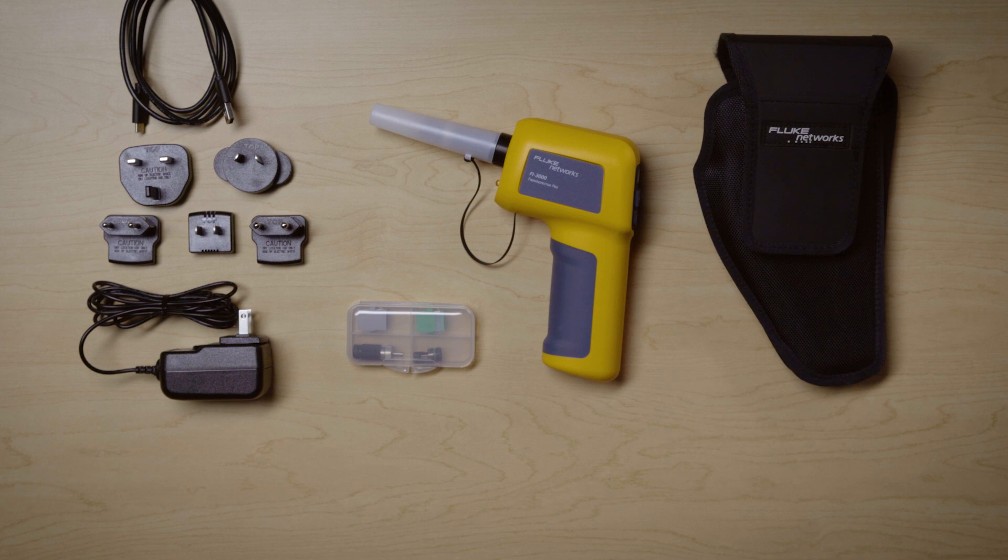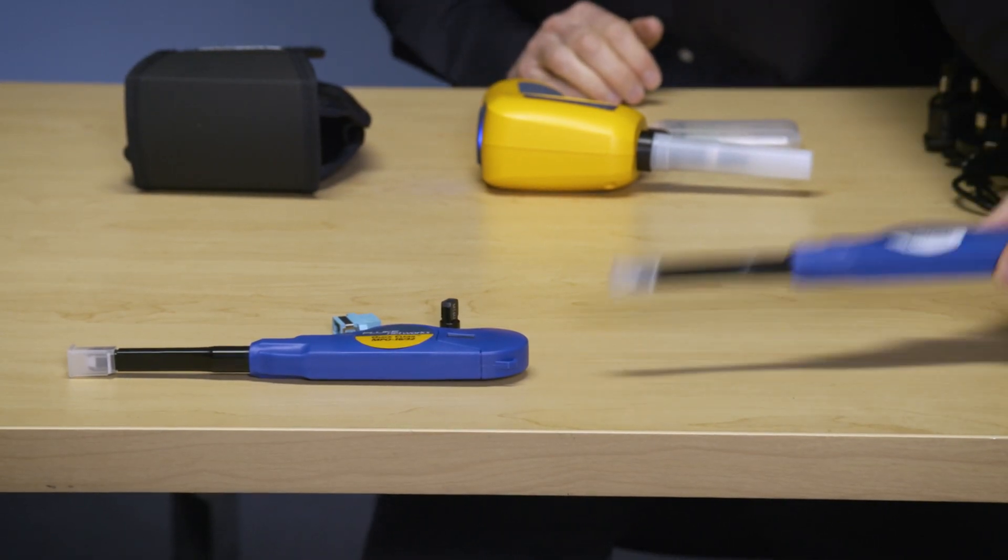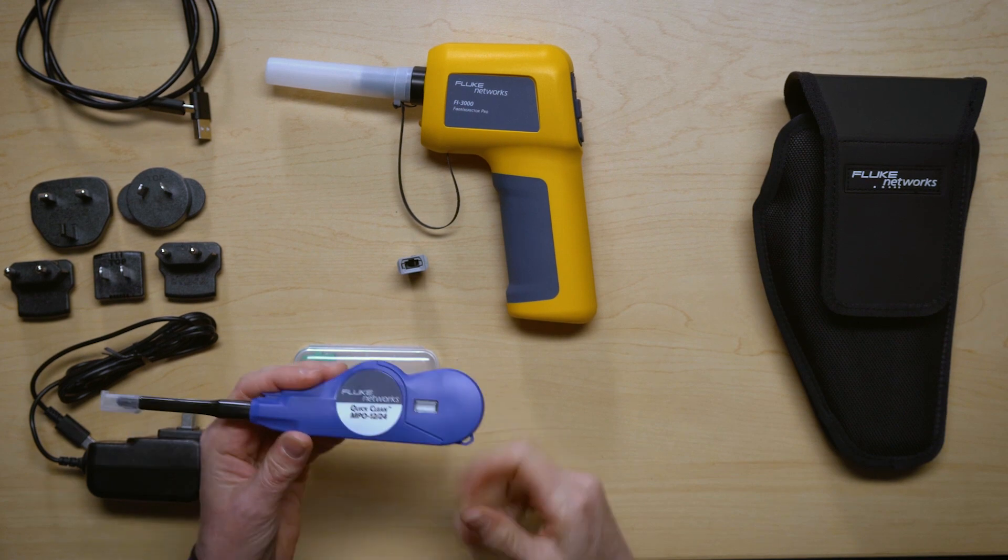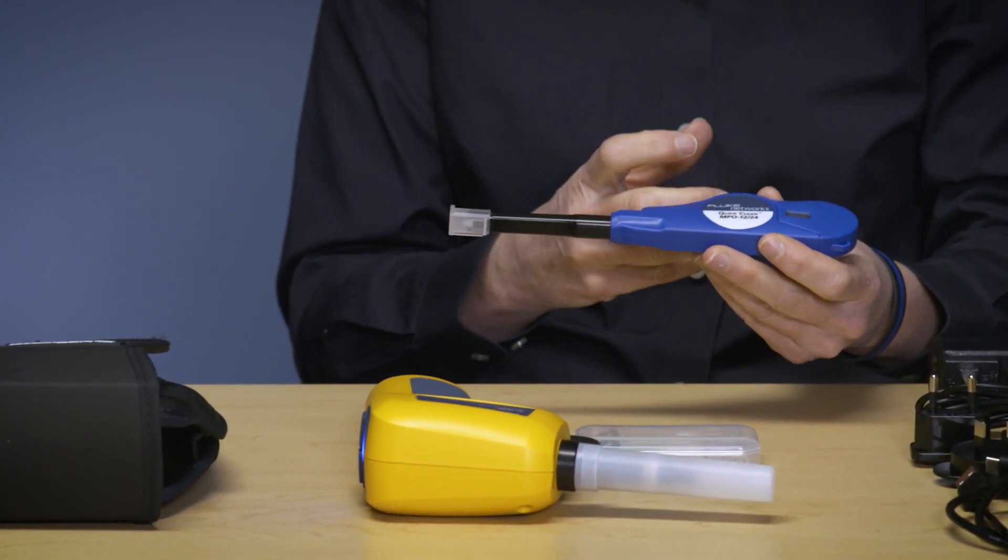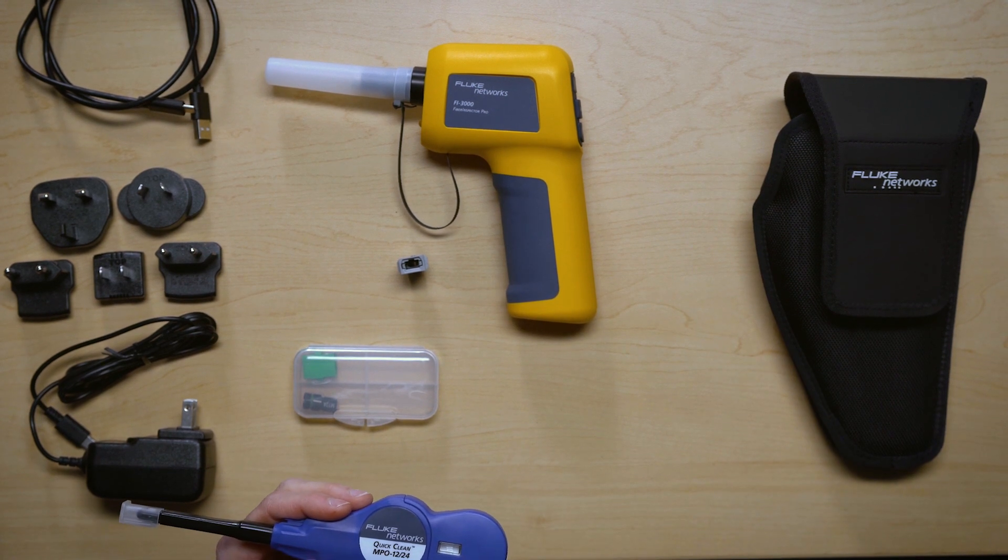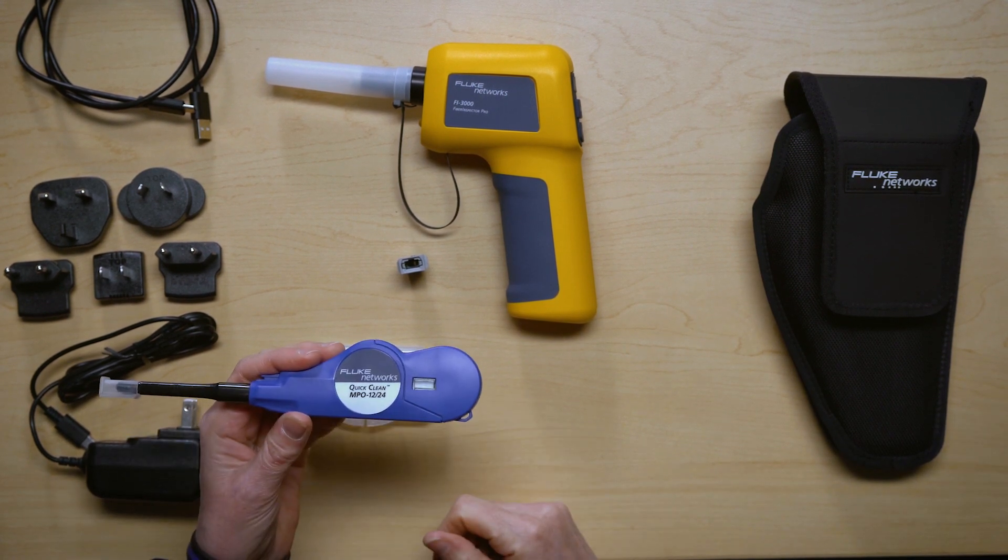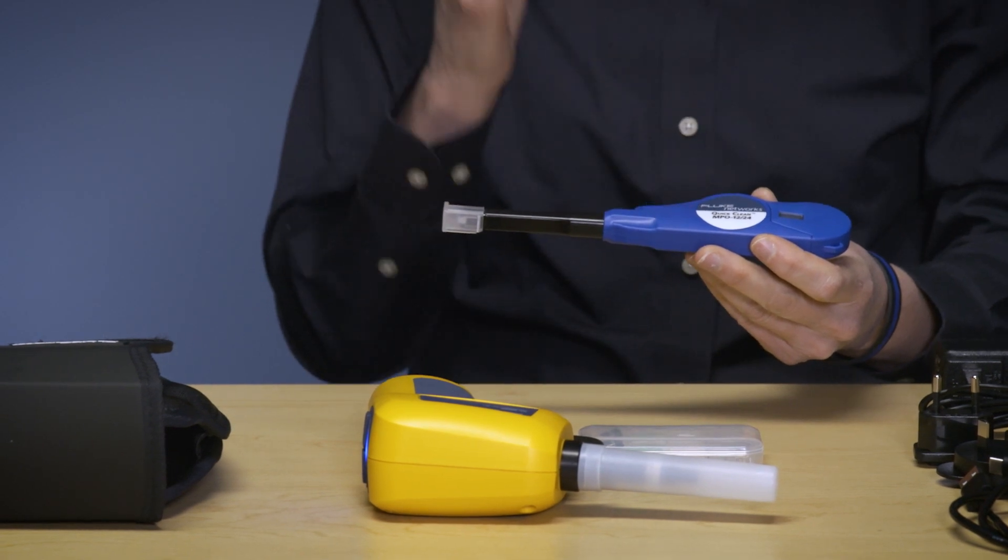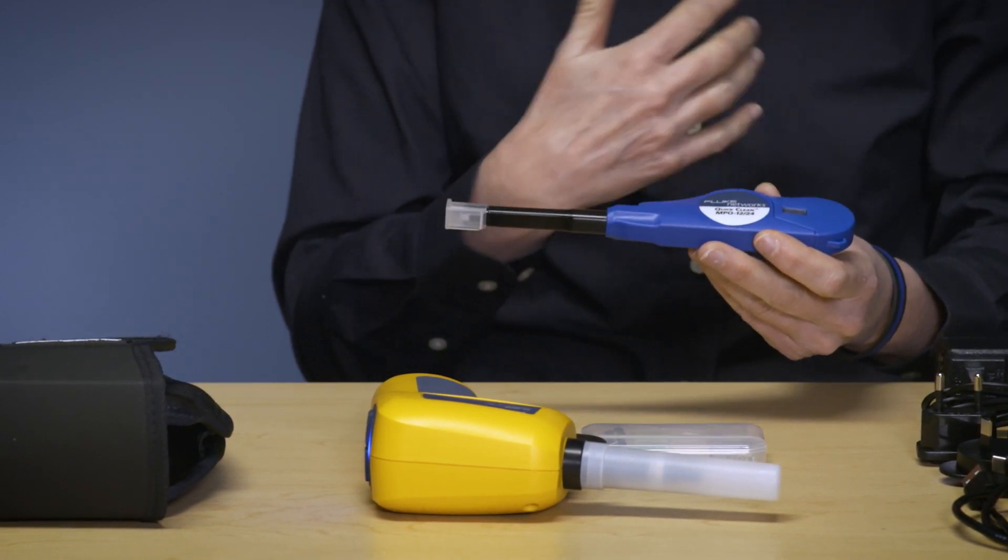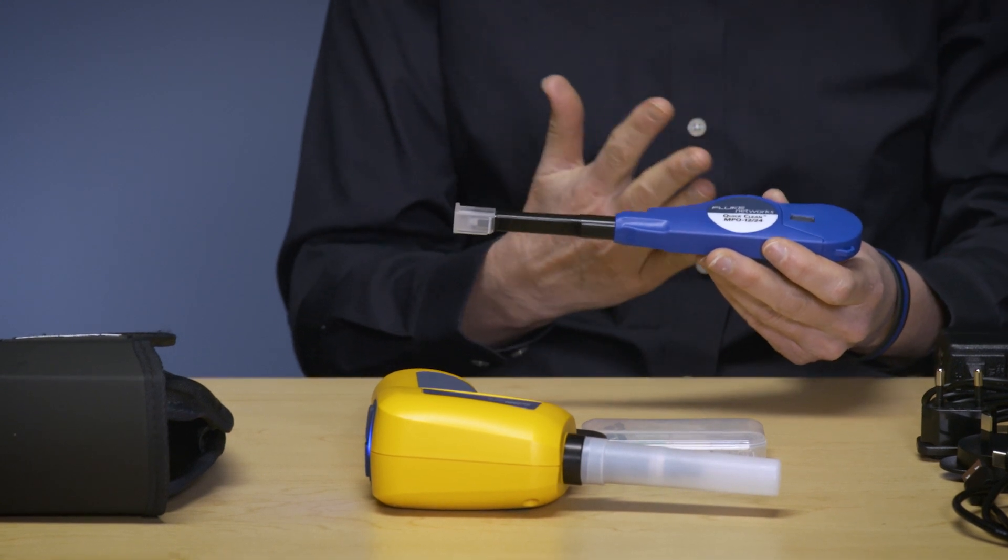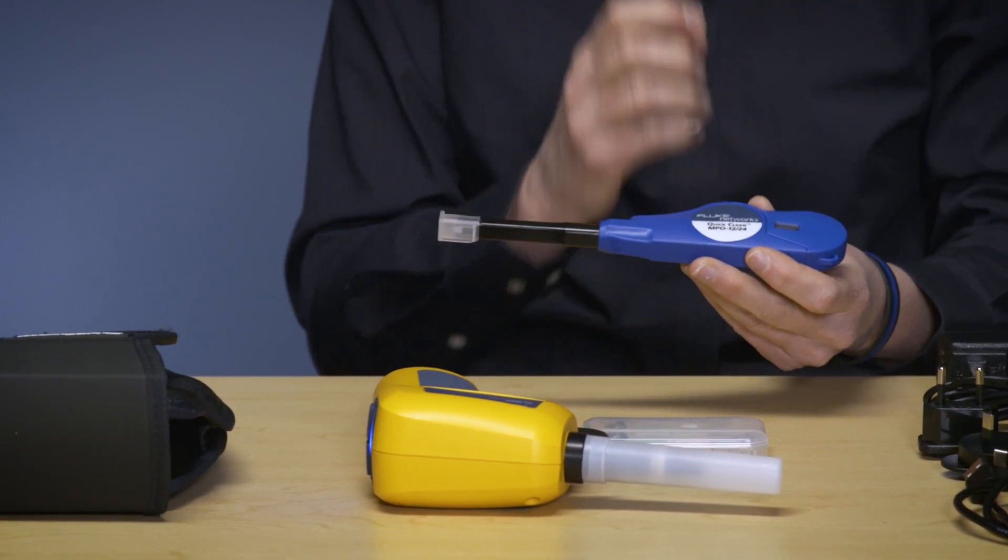Next I want to show some optional accessories that you may be very well interested in. The first is a quick clean and this is 1224. It is good for cleaning a 1x12 or 2x12 interface. It's really important that you clean your MPOs because dirt can just move from one fiber to another fiber when you're using an MPO.